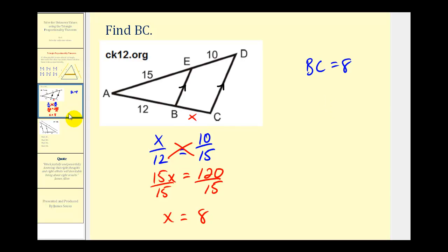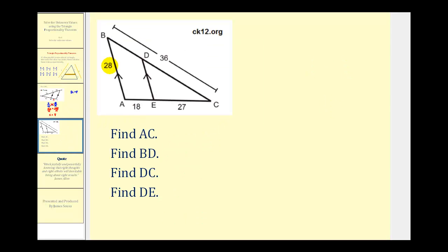Now let's take a look at a second example that's a little bit more involved. Again, here we see that segment AB is parallel to segment ED. And we're asked to find the length of AC, the length of BD, the length of DC, and the length of DE.